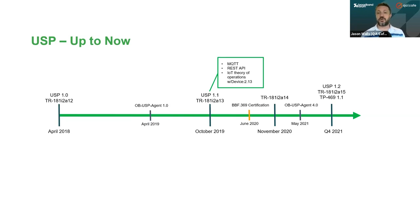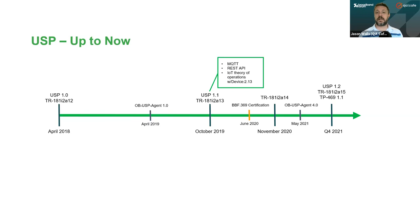We then launched the certification in June 2020, which is a self-testing certification program so people can run the tests on their own, send them in, and get their agents certified. Amendment 14, or Device:2.14, came out last year. The OB-USP agent is currently on its fourth version — the fifth version is coming out soon and we'll actually have a webinar about that in a month or two.